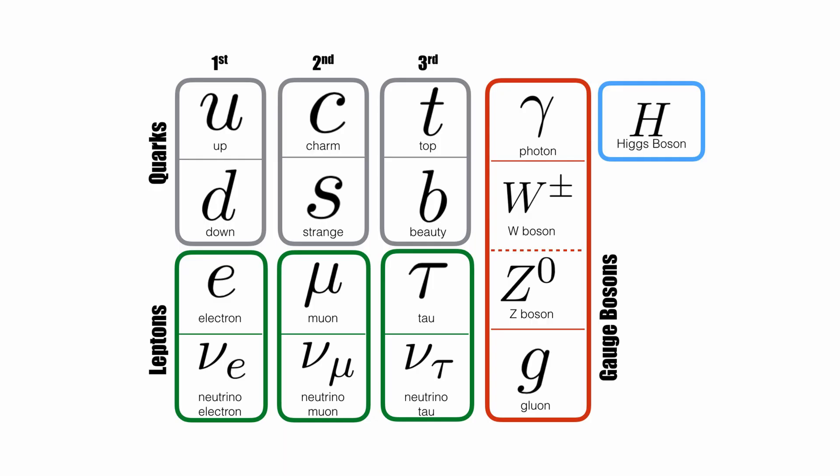In the standard model, there is only one way of giving masses to the matter particles. This is done through the Higgs mechanism and the so-called Yukawa couplings, the terms that couple the Higgs to the three types of massive matter particles: the up-type quarks, the down-type quarks and the charged leptons.